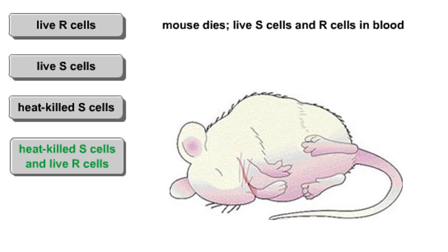Mice injected with a mixture of live R cells and heat-killed S cells developed pneumonia and died. When Griffith examined blood samples from these mice, he found both live R cells and live S cells.